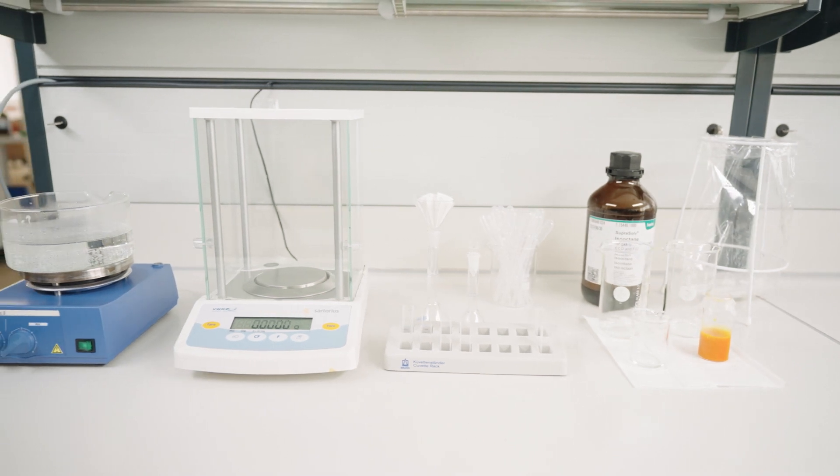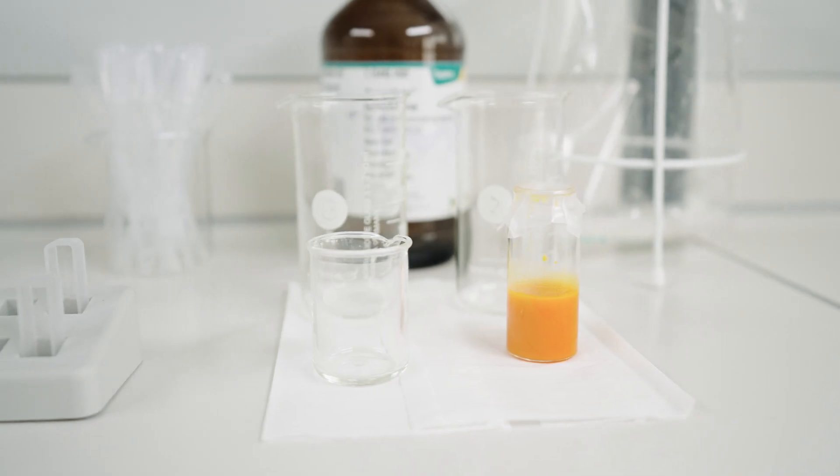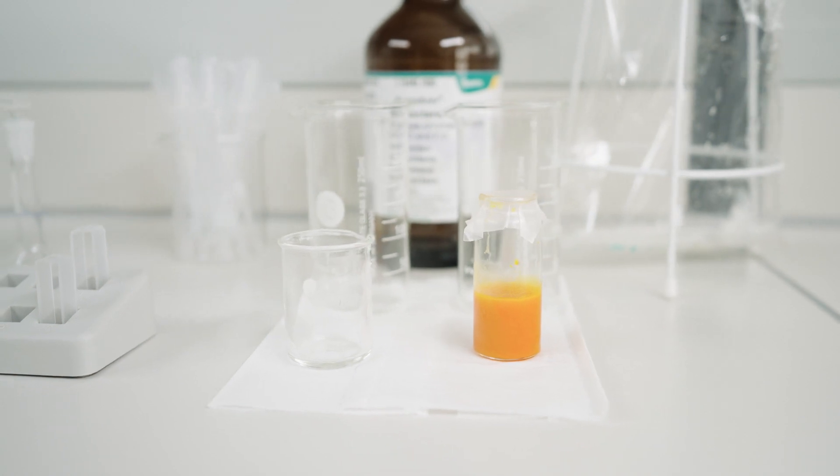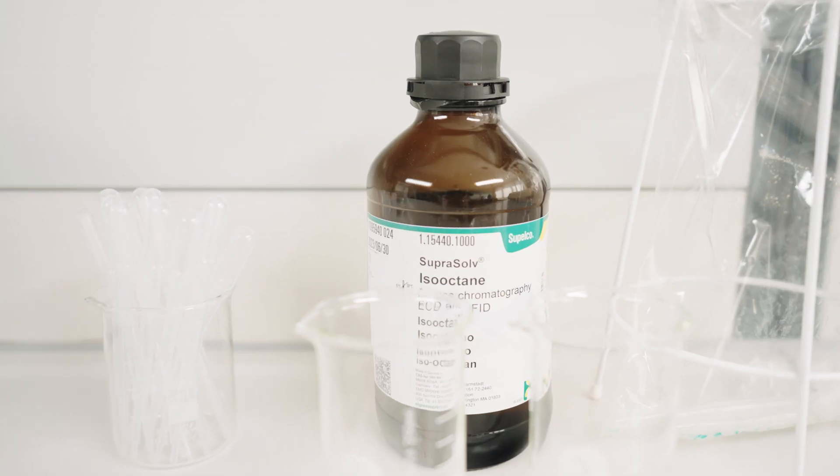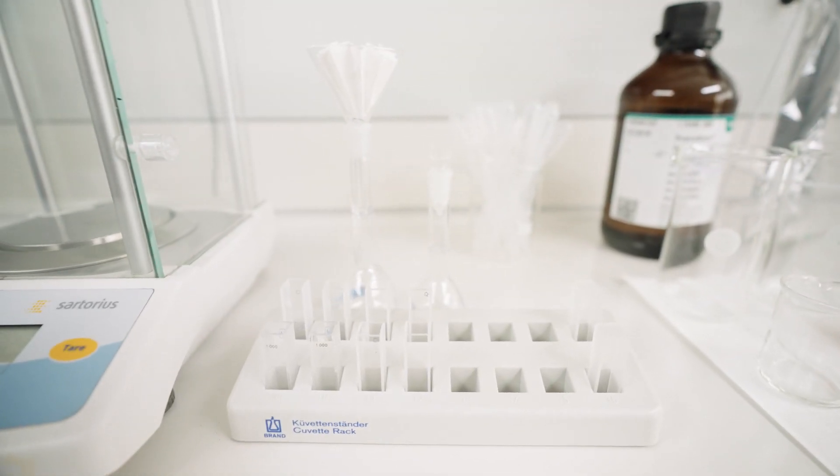We will start with the necessary materials. Besides the crude palm oil sample, we will require the following items. First, we need the spectrophotometer and also ISO octane. We will be working with high-quality optical materials such as quartz cuvettes. We urge you not to use low-quality solvents that could damage the optical surface. We will be using a 10 mm quartz cuvette.